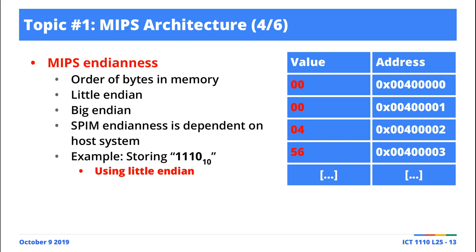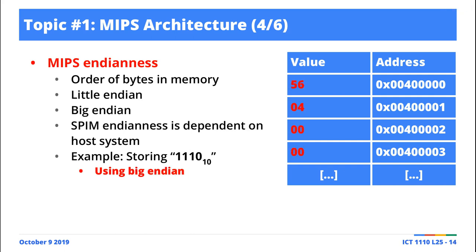Because this is the most significant byte. But if we flip things around and we're using Big Endian, it's the opposite. The memory address is still the same, but then the most significant byte is going to occupy the smallest memory location.